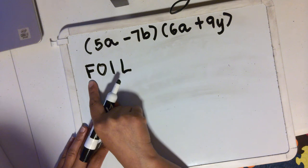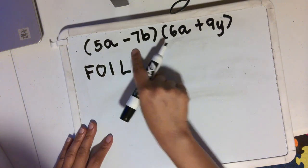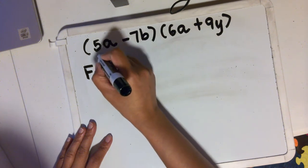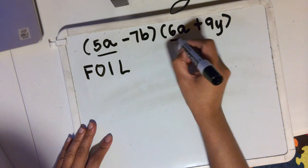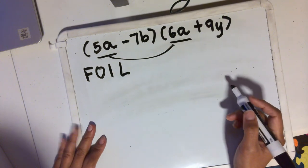So first term by first term. That means the first term of the first binomial multiplied by the first term of the second binomial. So that first term is this multiplied by the other first term, so 5a times 6a.